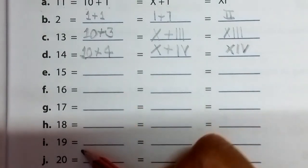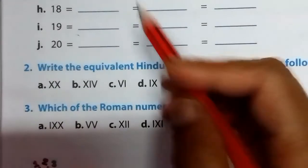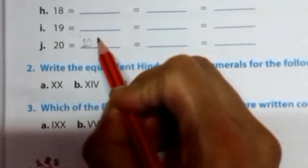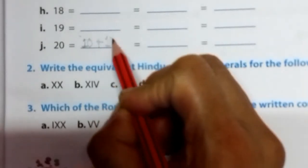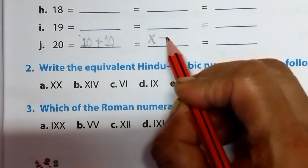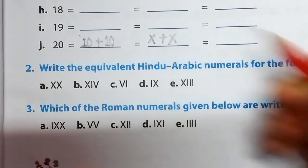Like this, you complete this up to 19. Then how do we do 20? 10 plus 10 equals 20. Then 10 is written like this, plus 10, like this.